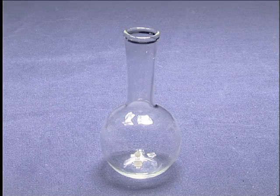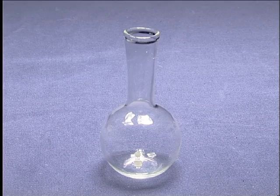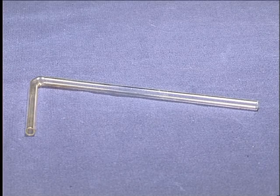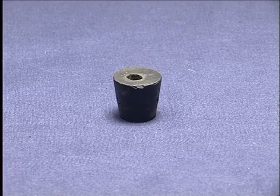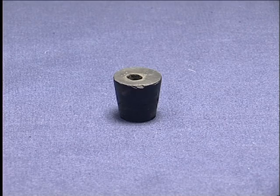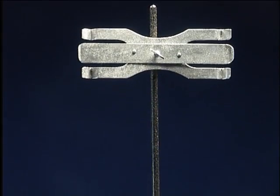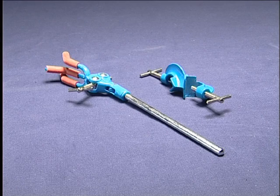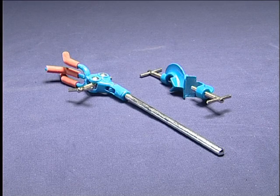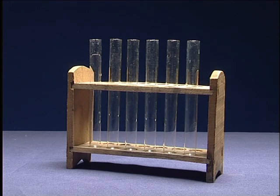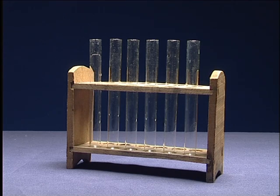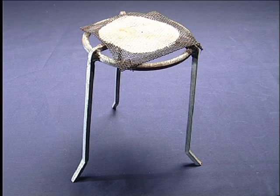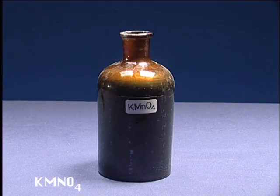Equipment includes Florence flask, L-shaped glass tube, perforated stopper, tripod, clamps, rings, graduated cylinder, test tubes and test tube rack, wire gauze, and potassium permanganate.